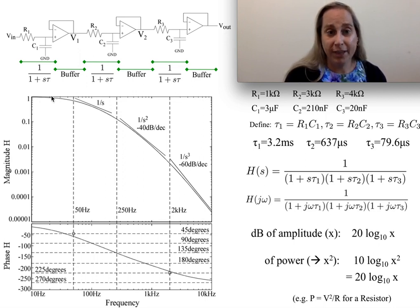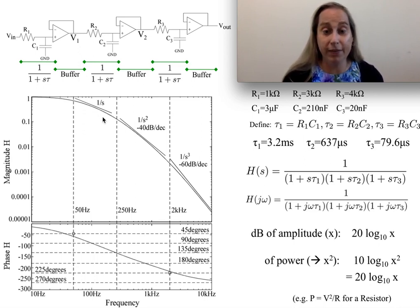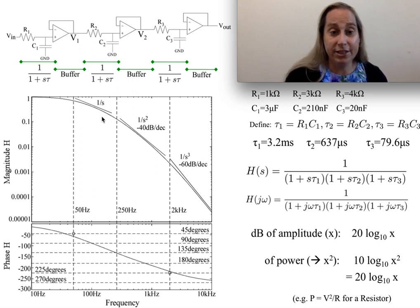Then when I get towards the first time constant, which is 50 hertz, I'm going to start seeing I get to a 3 dB point and then dropping off on the 20 dB per decade or the 1 over s type of behavior. And then as I continue to 250, what I'm going to see is I get the second one now. It gives me 1 over s squared. And then 2 kilohertz is the third tau gives me 1 over s cubed.